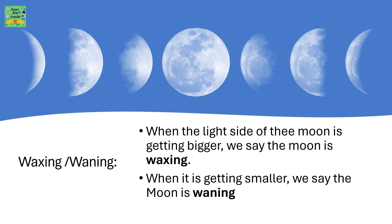Waxing or waning. When the light side of the moon is getting bigger, we say the moon is waxing. When it is getting smaller, we say the moon is waning.